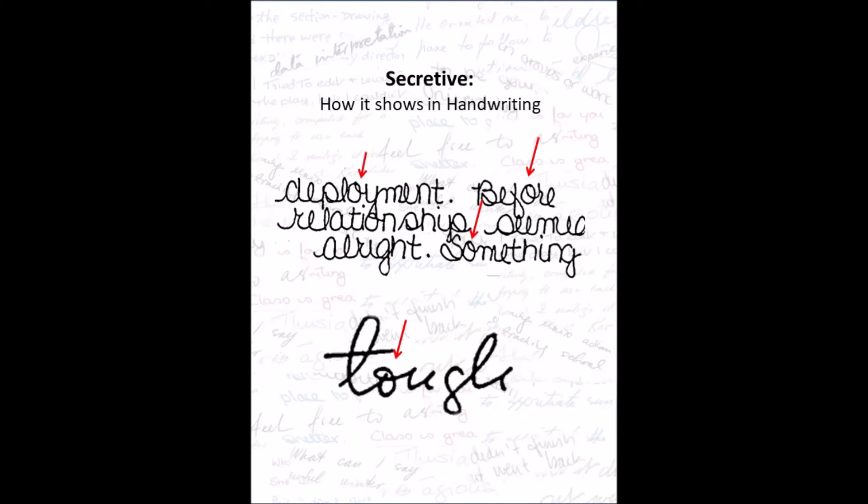Secretiveness in writing does not mean deceitful, though that can be part of it. It can just be someone who is uncomfortable sharing things close to themselves. It shows in writing where there is a loop on the right-hand side of a circle letter.